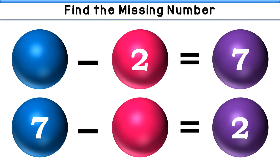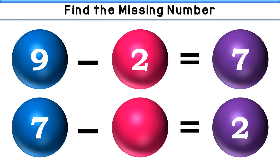What minus 2 is equal to 7? The answer is 9. 9 minus 2 is equal to 7. Now: 7 minus what is equal to 2?